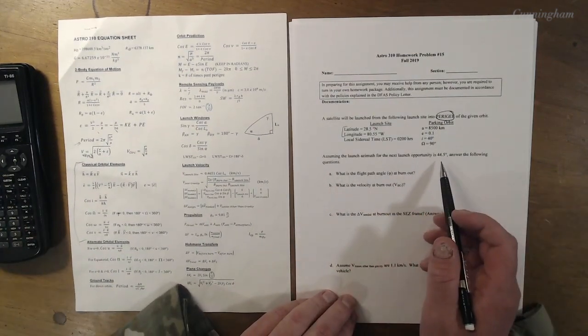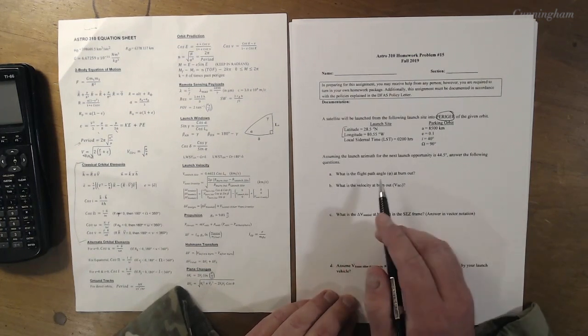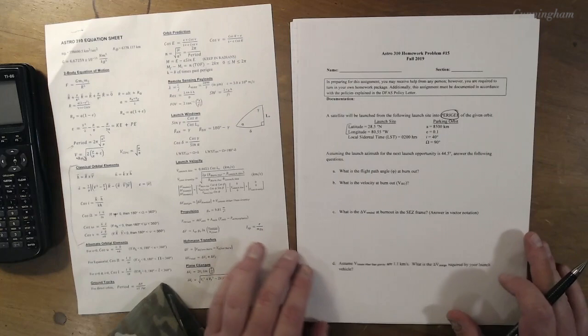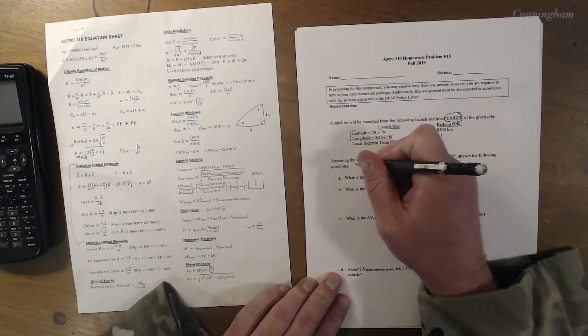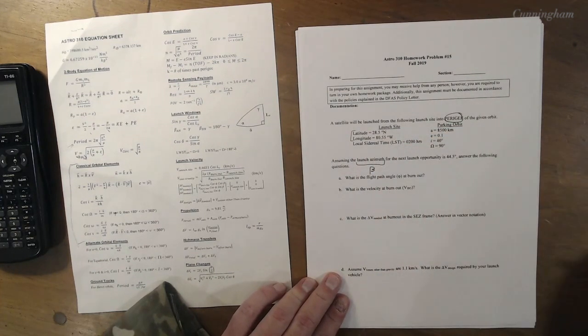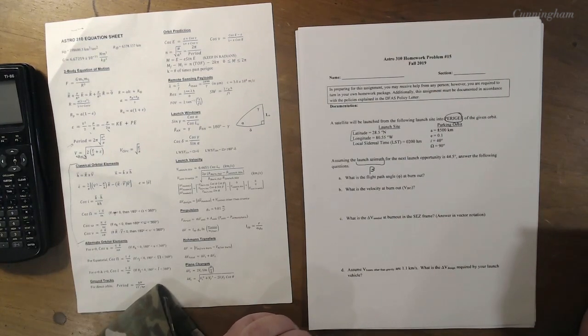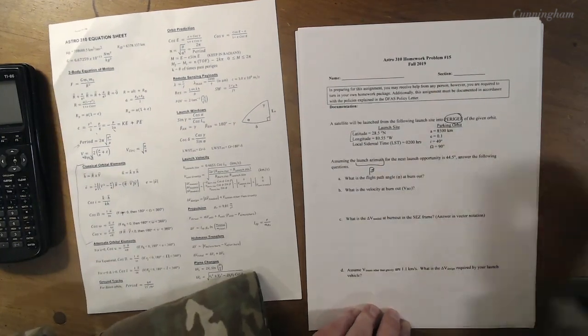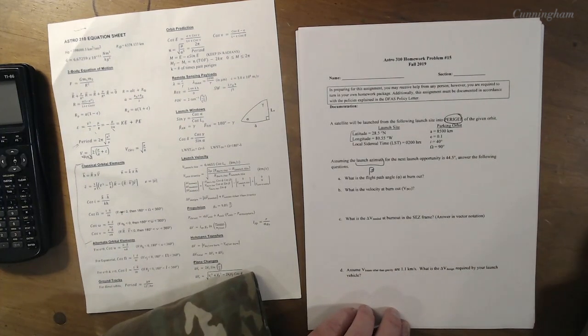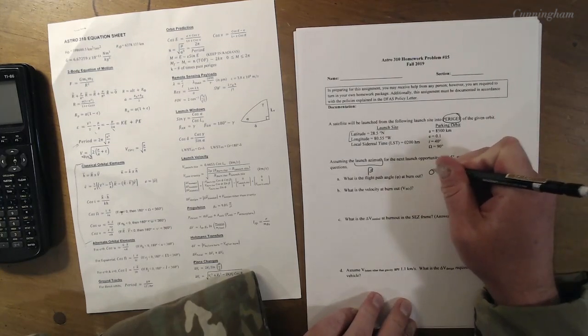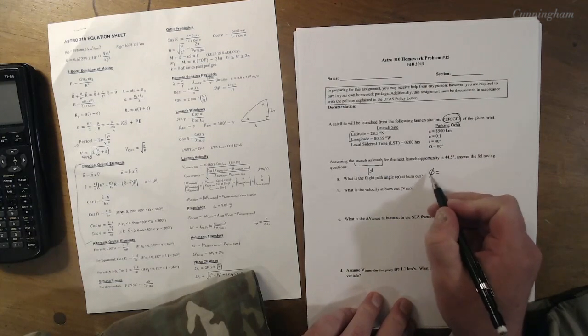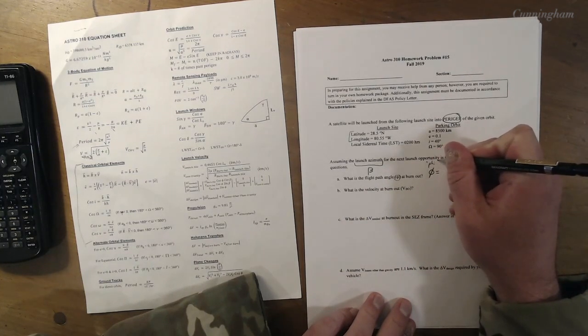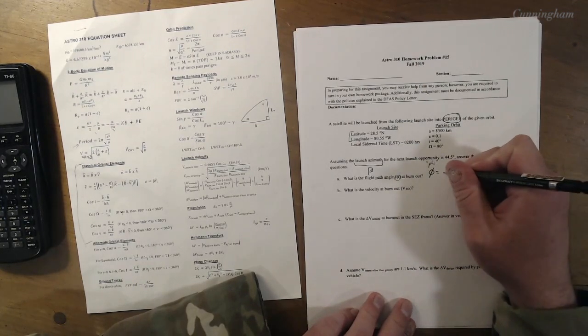First things first. Assuming the launch azimuth for the next launch opportunity is 44.5 degrees. You guys remember from the last lesson where we had to figure out the launch azimuth. They're just giving it to us here. The launch azimuth, the Greek letter for that was beta.